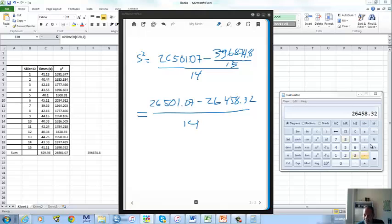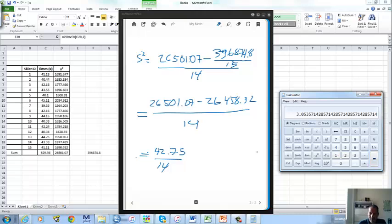So let's go back to our calculator. Let's put a little negative sign in front of that, because we're going to subtract it from this other value here. So we're going to add to it 26501.07. We get 42.75. So we get 42.75 divided by 14. So we're going to divide this by 14. Equals 3.054. 3.054.